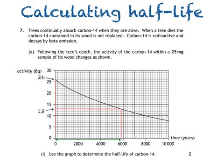You can see on the x-axis of the graph that 10 divisions takes us to 2,000 years, so each division must represent 200 years. Now we know the scale, we can work out that the half-life of the source is 5,800 years, which means we've answered the question.